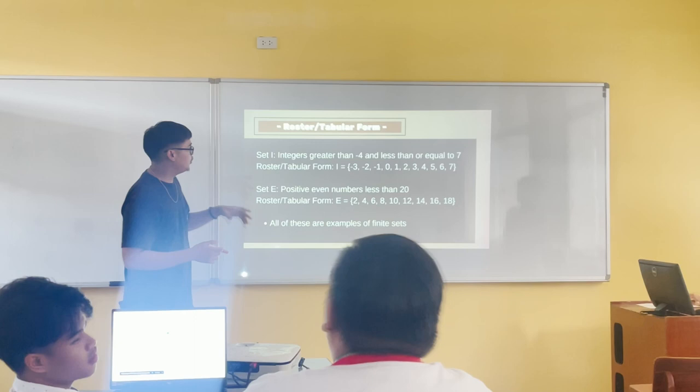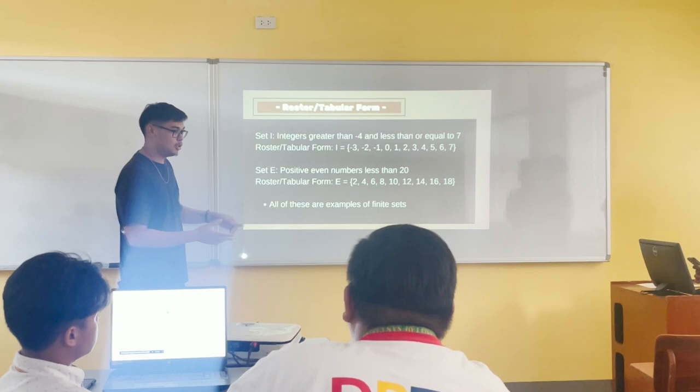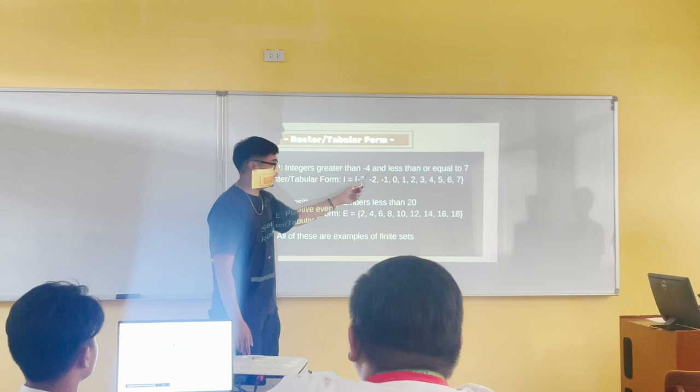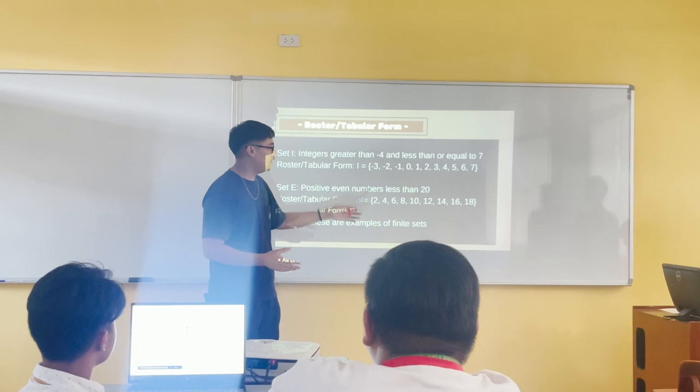Now we have a problem: integers greater than negative 4 and less than or equal to 7. For the roster tabular form, we will write set A and list anything above negative 4. We will not write down negative 4 because the condition says greater than negative 4, so we list negative 3 until 7.